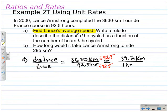We need to write a rule to describe the distance d he cycled as a function of the number of hours h he cycled. This comes back to the dependent and independent variables idea. The distance depends on how long he travels for. So the distance is equal to his speed, which is 39.2 kilometers per hour, times the amount of time he travels. The distance is equal to 39.2 kilometers per hour times h, how long he travels.